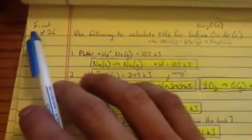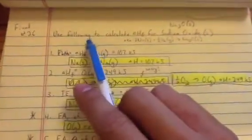Okay, so let's talk a little bit about number 26 on the sample final exam. They want us to use the following data to calculate the delta H of formation for sodium oxide in a solid form. Sodium oxide will be Na2O solid.